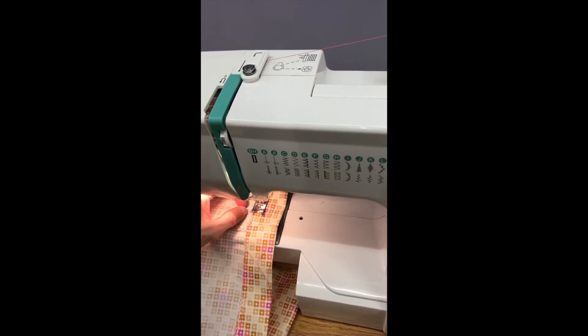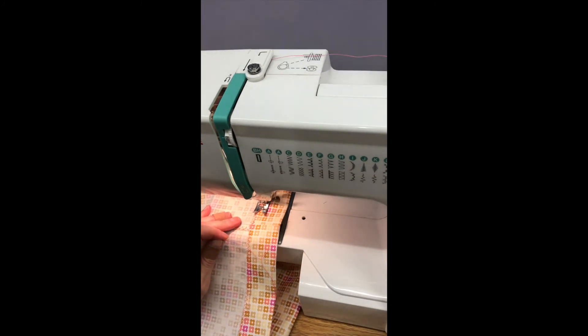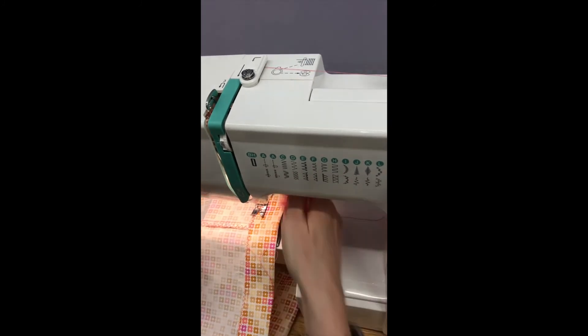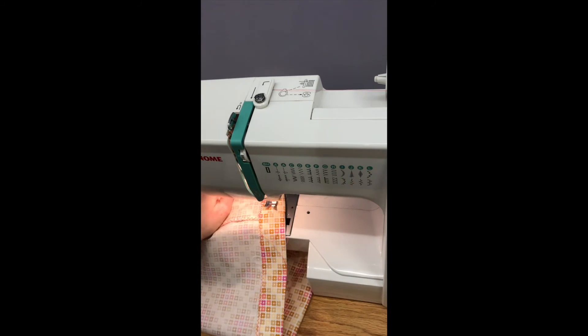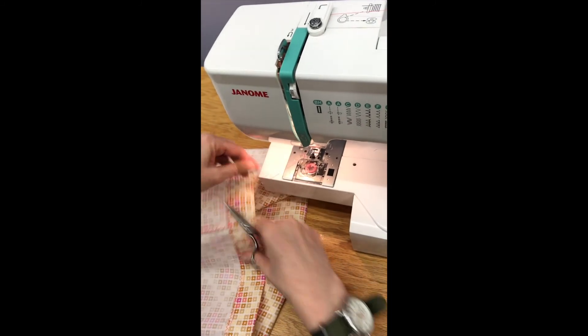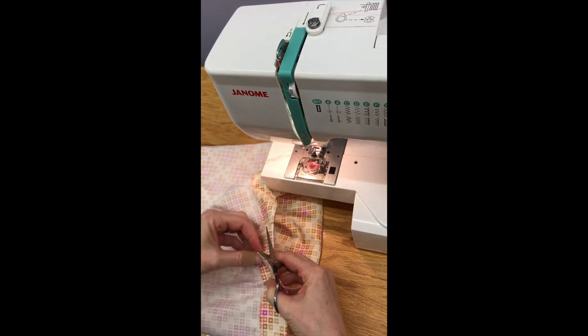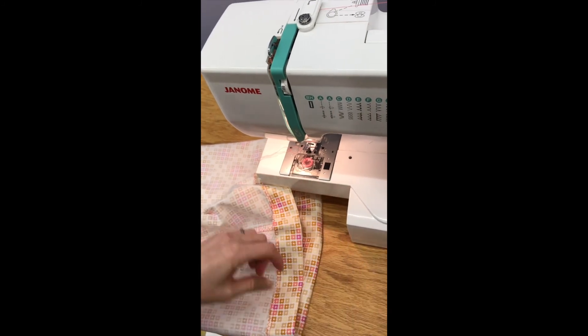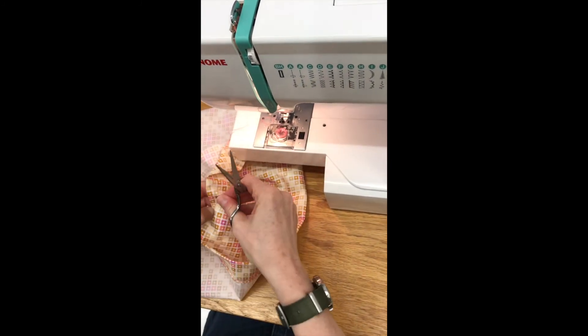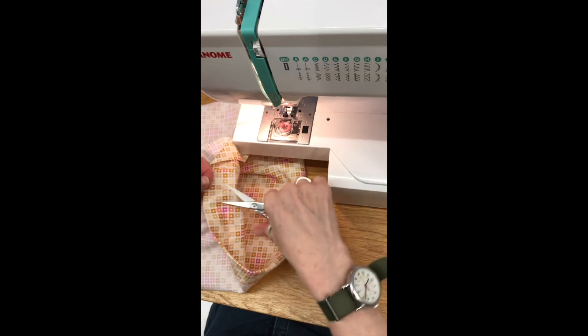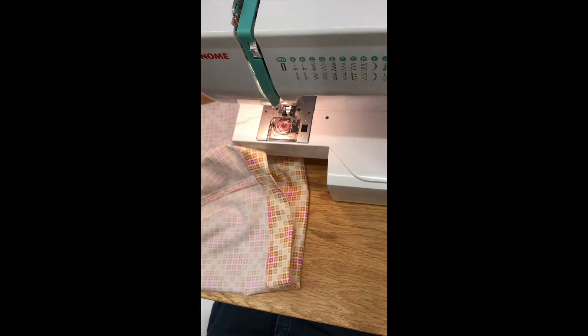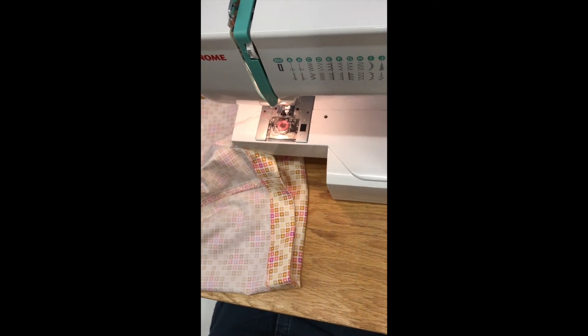And then when I get to my stop pin, I'm going to take that out and backstitch right there. The next thing I'm going to do is sew down my hem. And I can sew my hem all the way shut because of course I don't need to leave an opening for that because elastic is not going to go in there.